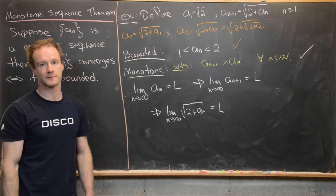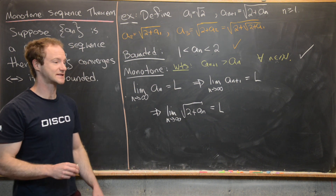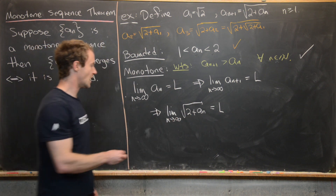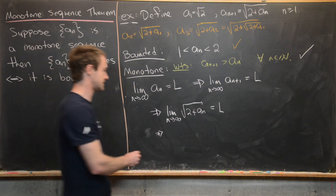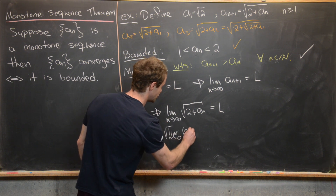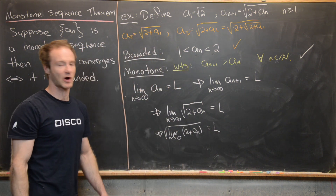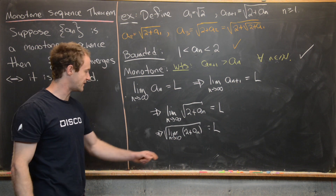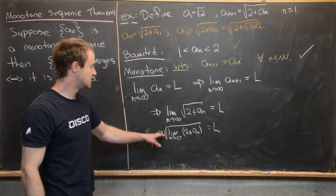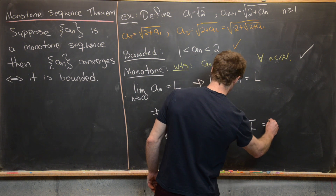By a result from a previous video, we can bring the limit inside the square root under the appropriate conditions, and we're good to do so here. That gives us the square root of the limit as n goes to infinity of 2 plus a sub n equals L. By the algebraic limit laws, the limit of 2 plus a sub n is just 2 plus L. So we arrive at the equation: the square root of 2 plus L equals L.